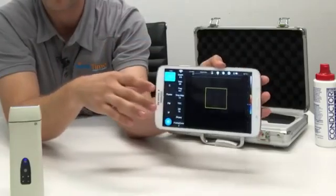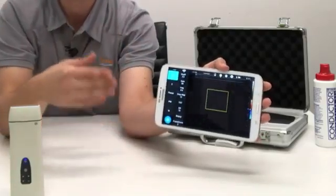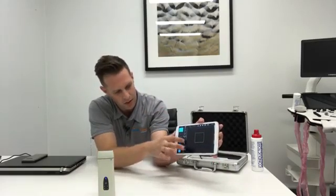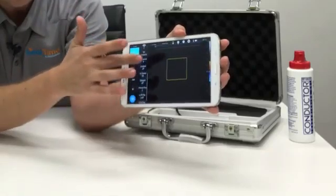Under the B menu you have all your image optimization parameters, things like depth, frequency, gain, all of those type of things that you would be used to seeing in an ultrasound machine. But it has everything: enhanced mode, harmonic imaging, your TGC sliders, dynamic range, it's all here under your B menu.